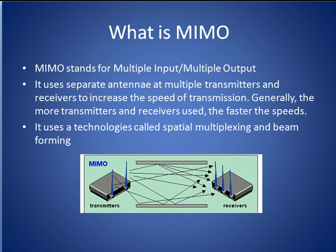MIMO's core technologies are spatial multiplexing and beamforming. We will touch on these difficult concepts in this tutorial. The horizontal gray bars in this picture depict how signals often arrive at a receiver after having bounced off distant objects. More on that later.